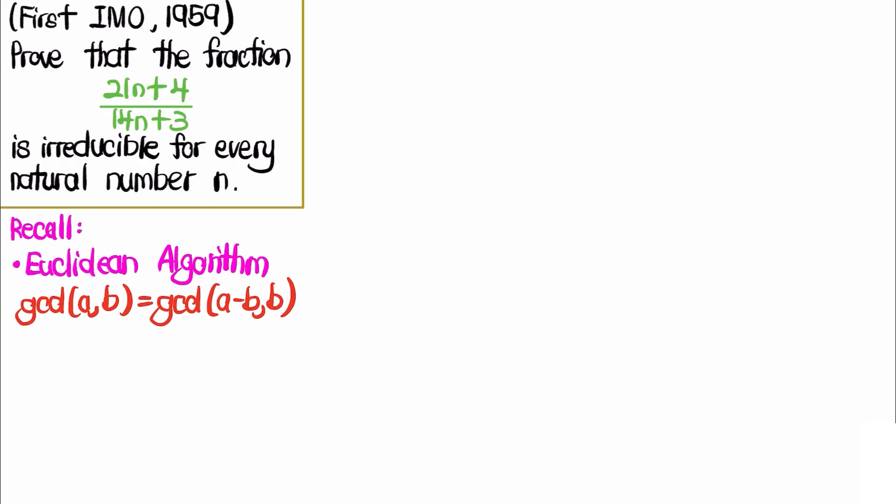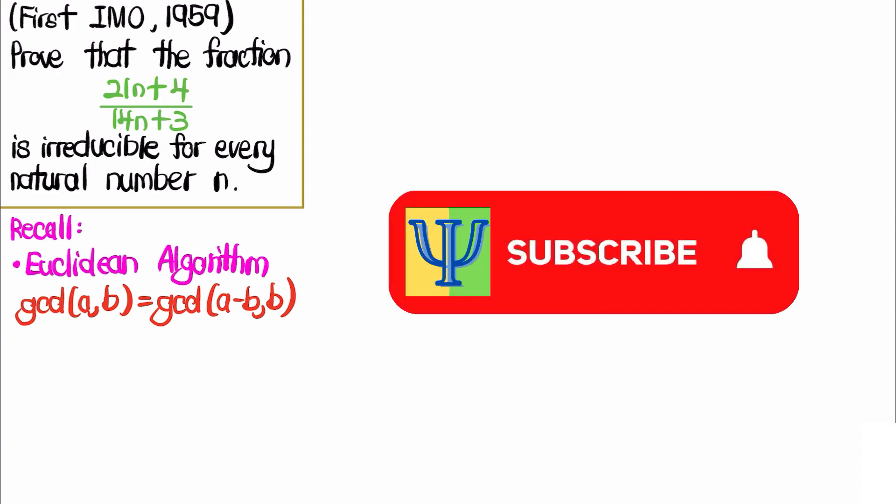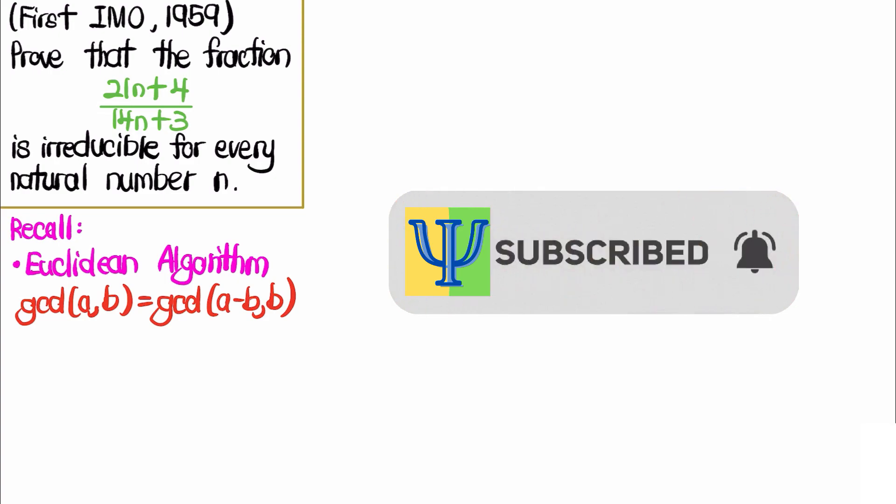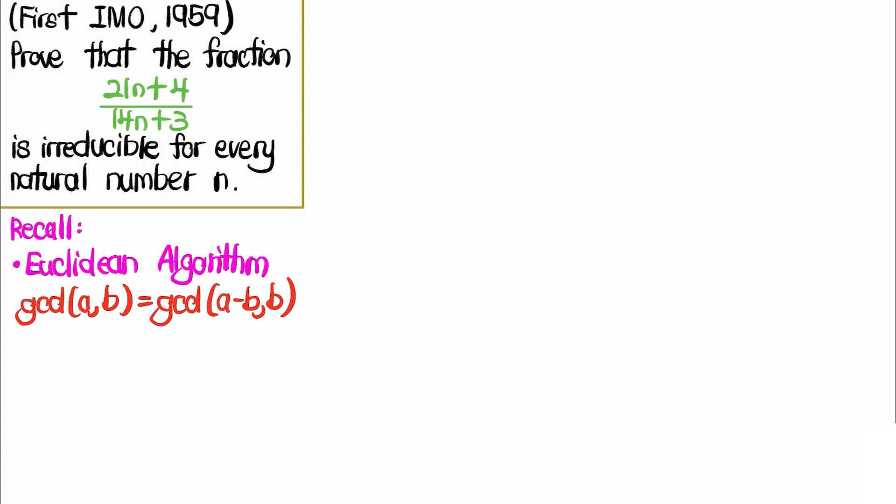Let's solve an IMO problem from the first IMO in 1959 — this is also the first problem to be featured in the exam. The problem states that we want to prove that the fraction (21n + 4) / (14n + 3) is irreducible for every natural number n. In other words, 21n + 4 and 14n + 3 do not share a factor. In this video, I will present three different solutions to this problem.